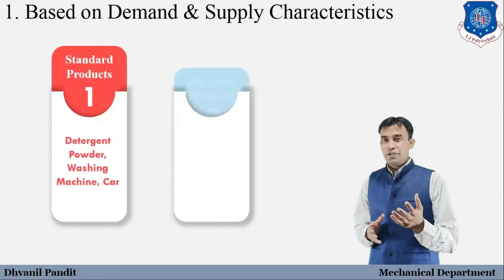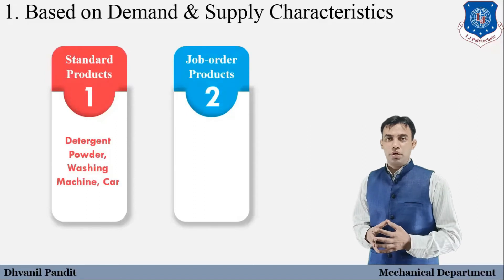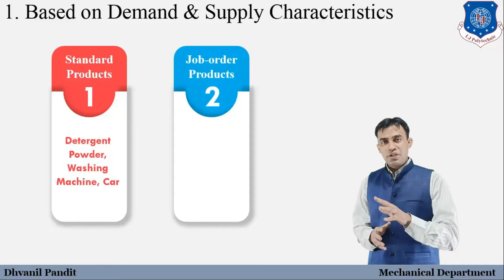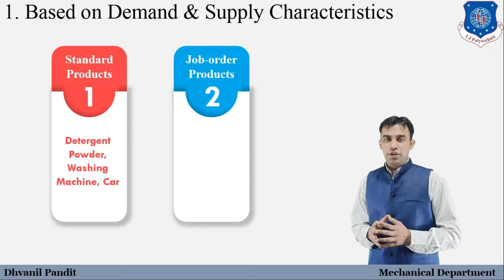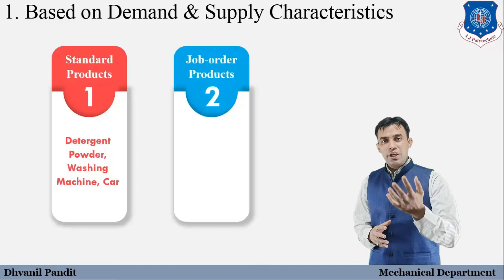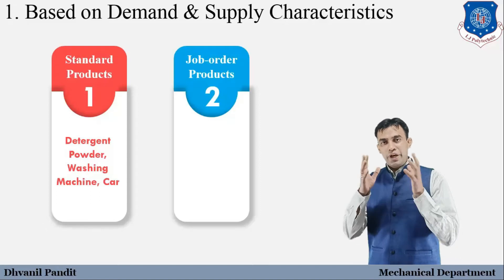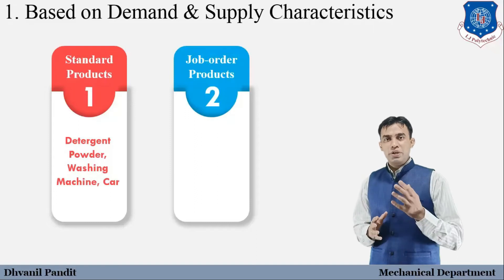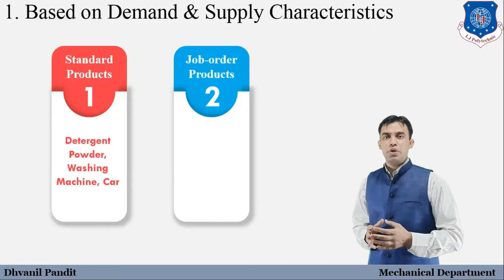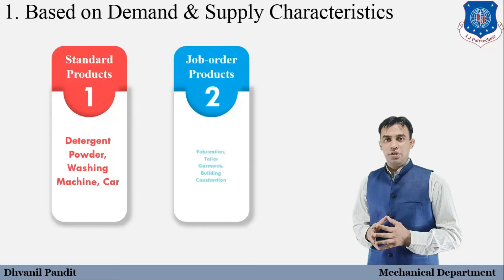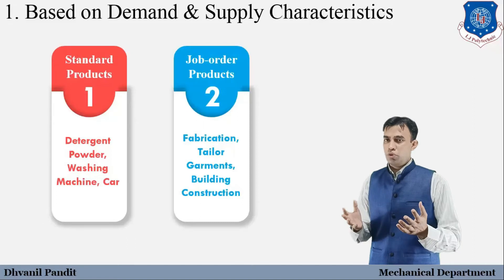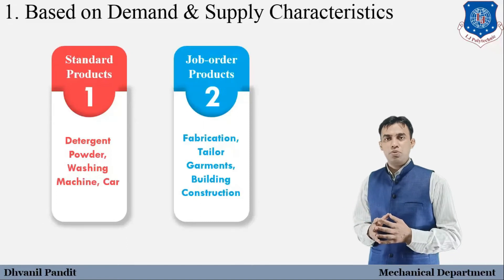The next type is the job order product. This is a specialized, specification-oriented product which is not available off the shelf — it is produced only to fulfill a specific order. Examples include fabrication, engineering equipment, tailor-made garments, and building construction.